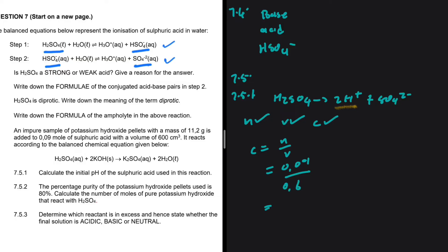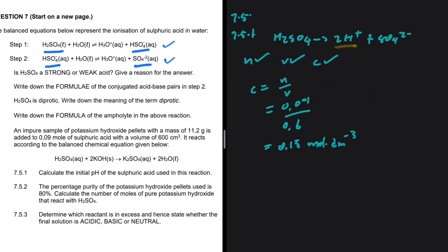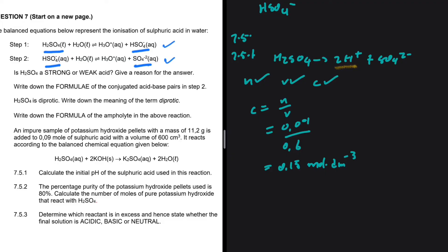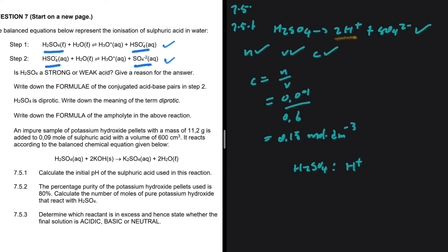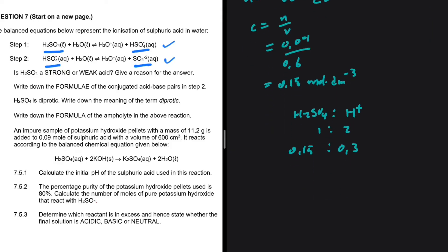So 0.09 divided by 0.6 is 0.15. So we have 0.15 moles per decimeter cubed. As we can clearly see from this equation, H2SO4 is to H plus, we have 1 is to 2. So if the concentration of H2SO4 is 0.15, the concentration of H plus will be 0.15 multiplied by 2, which is 0.3.